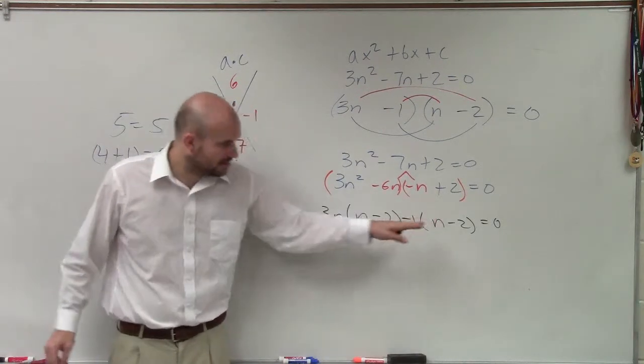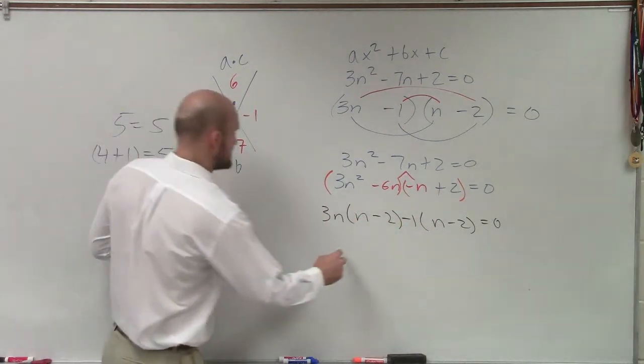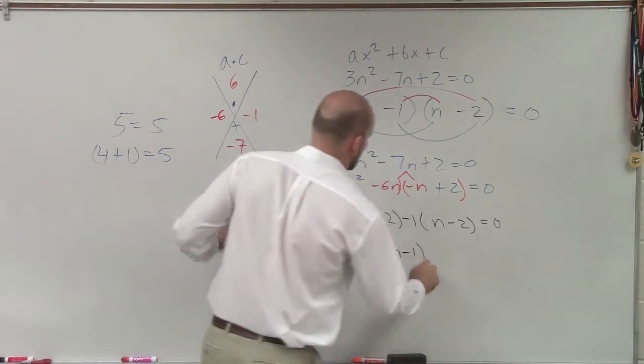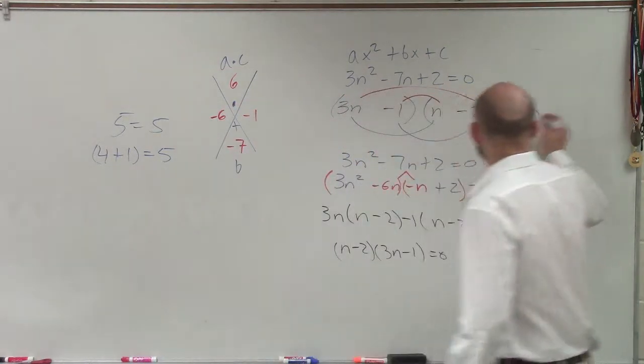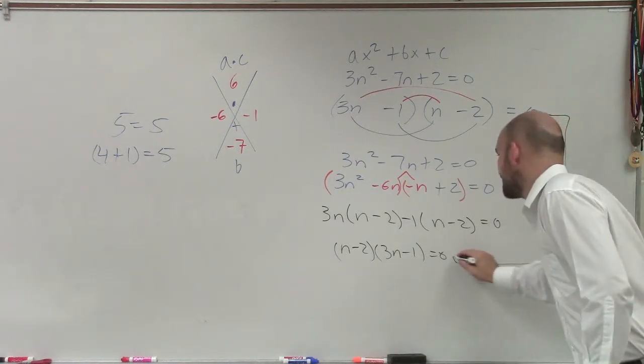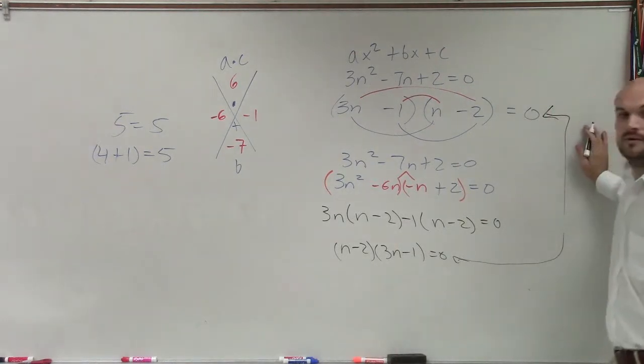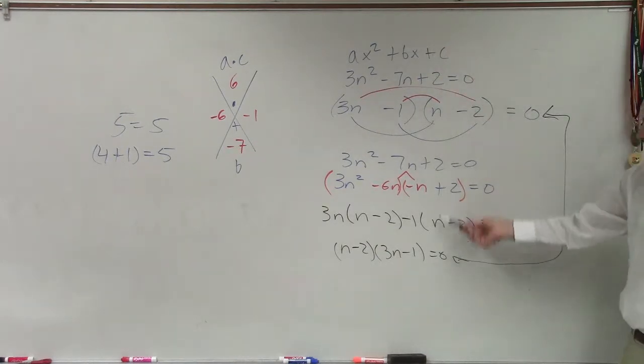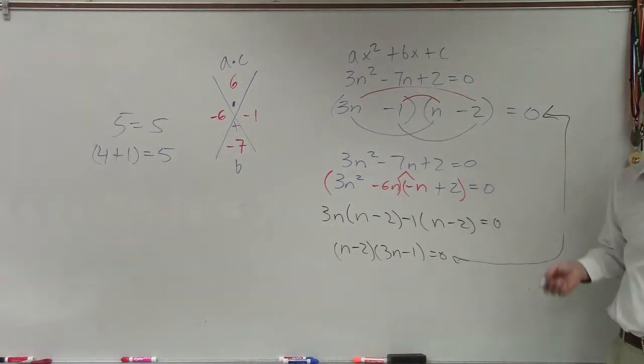Now you can see that n minus 2 are the same. So I can factor those out. N minus 2. Factor out to 3n minus 1 equals 0. Do you guys see how now these two are exactly the same? This one I just kind of did by trial and error. Here I kind of followed a pattern. But you're going to get to the exact same spot.